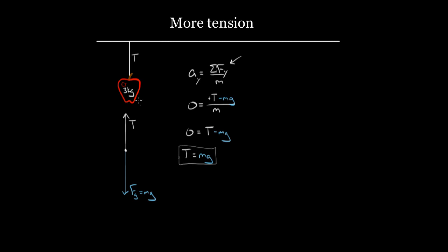Why would it not be equal to Mg? Imagine someone pulls down on the apple with an extra five Newtons — pulling the apple, which pulls the string, which makes it tighter. In that case, I've got one more force in my force diagram. That's five Newtons pointing downward, so when I write the net force I subtract five Newtons. I do my algebra as before, multiply both sides by M, and I'll have another minus five Newtons. When I solve for T, I add Mg and five Newtons to both sides.